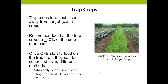A trap crop lures flea beetles away from the target crop. It's been recommended that the trap crop should be 10% or more of the crop area. Since the trap crop is consumed and damaged by the pest, it is usually unmarketable. Once flea beetles start feeding on the trap crop, you can kill them with different methods — like a botanically-based insecticide, by tilling the infested trap crop into the ground, or even using a flamer. It's important to note that trap crops may not provide complete protection, especially during heavy pest infestations.